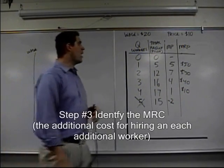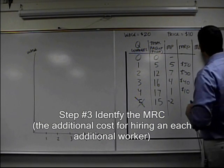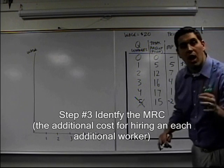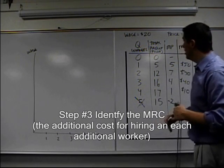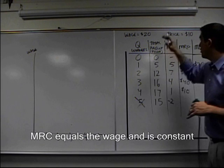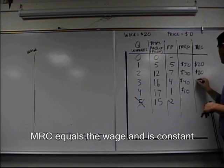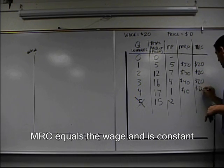Now, how many workers do I hire? Well, I hire where MRP hits something else, which is MRC. MRC is the additional cost of hiring these workers. And it's equal to the wage. This first worker is willing to work for twenty dollars. The wage is set by the market. Second worker is willing to work for twenty dollars. Twenty dollars. Twenty dollars looks like this.